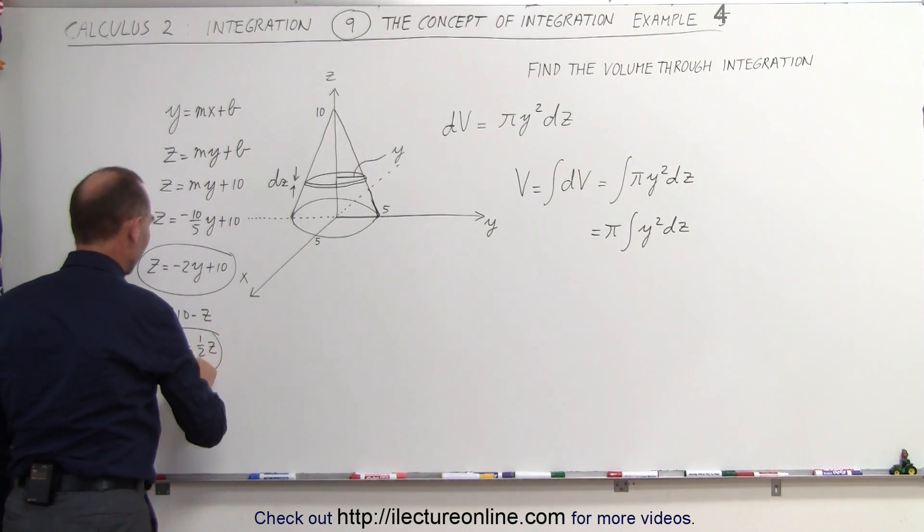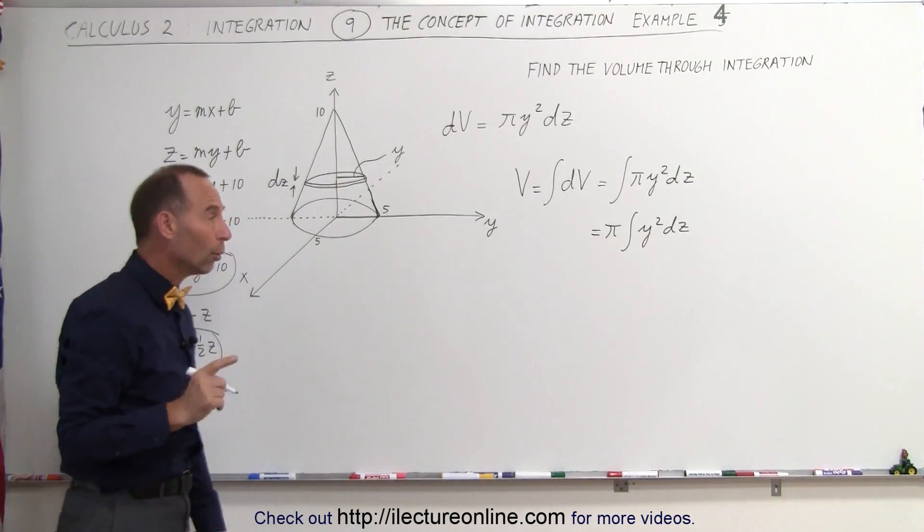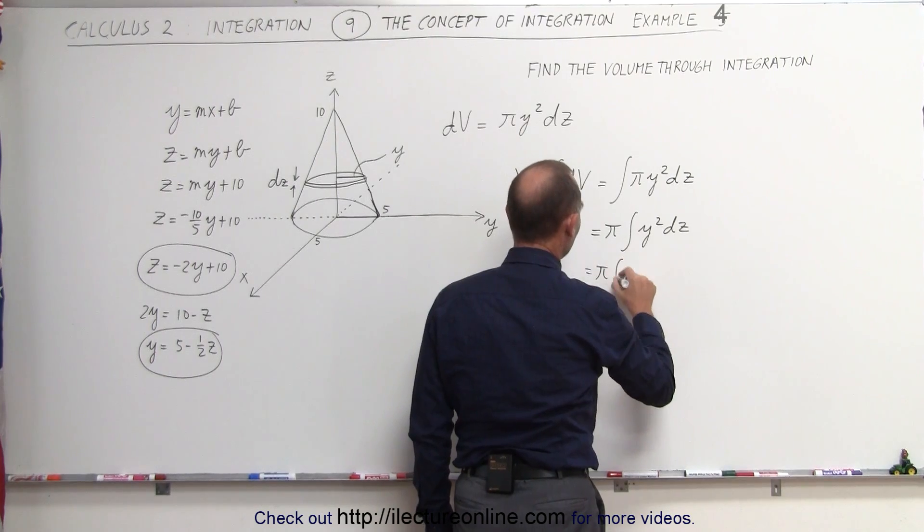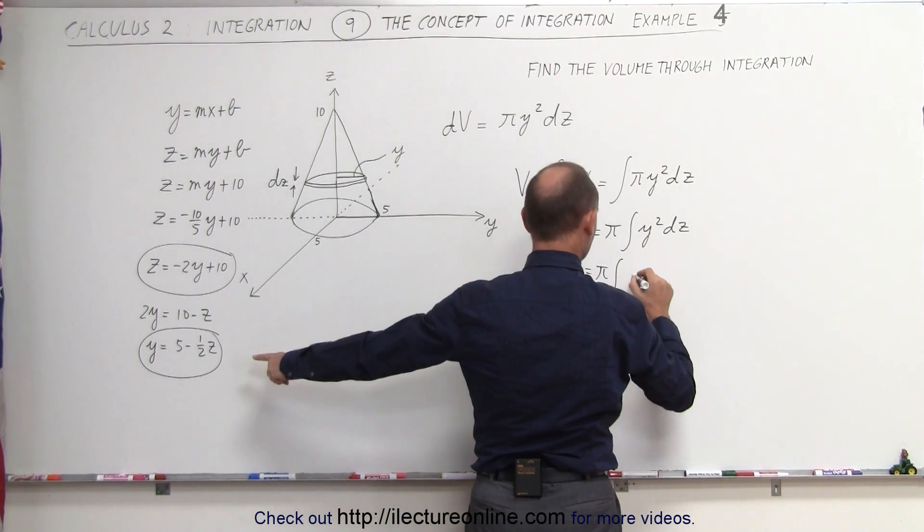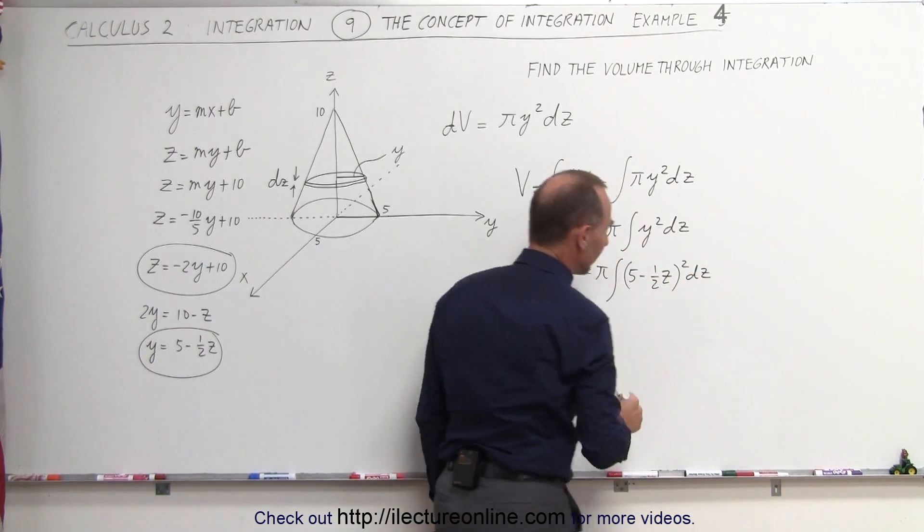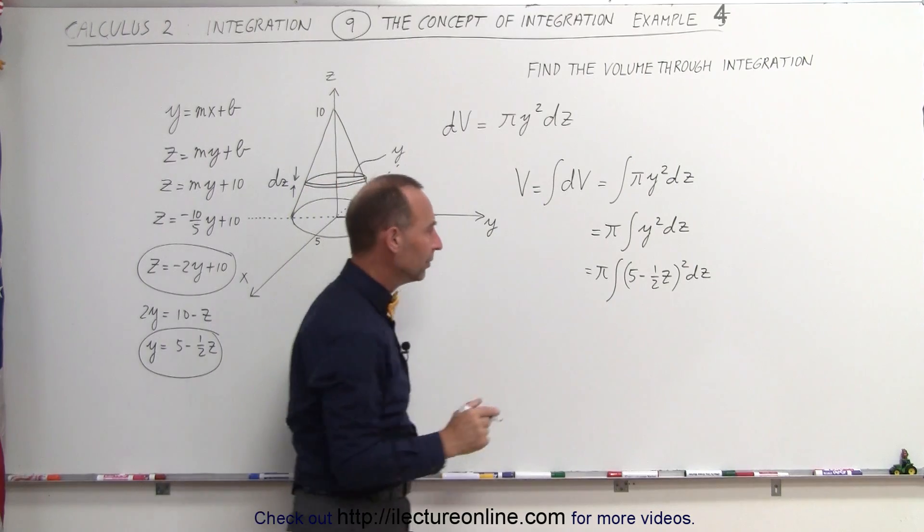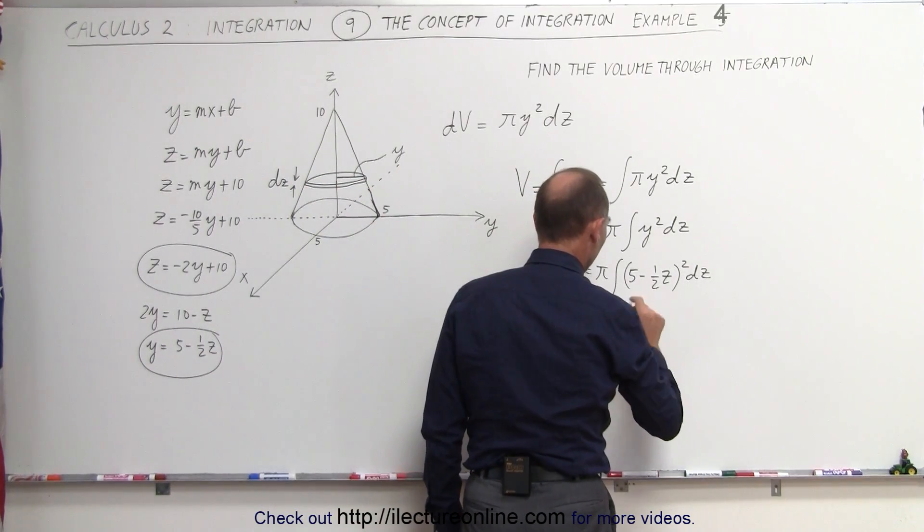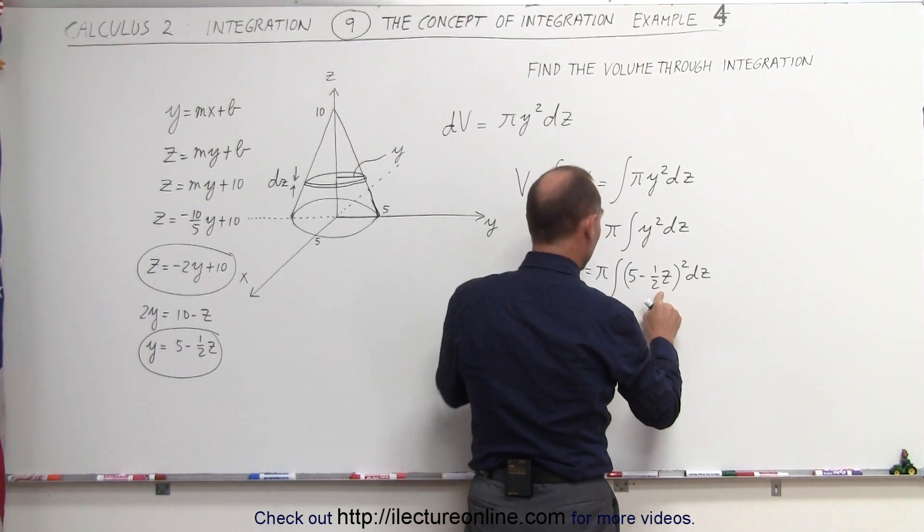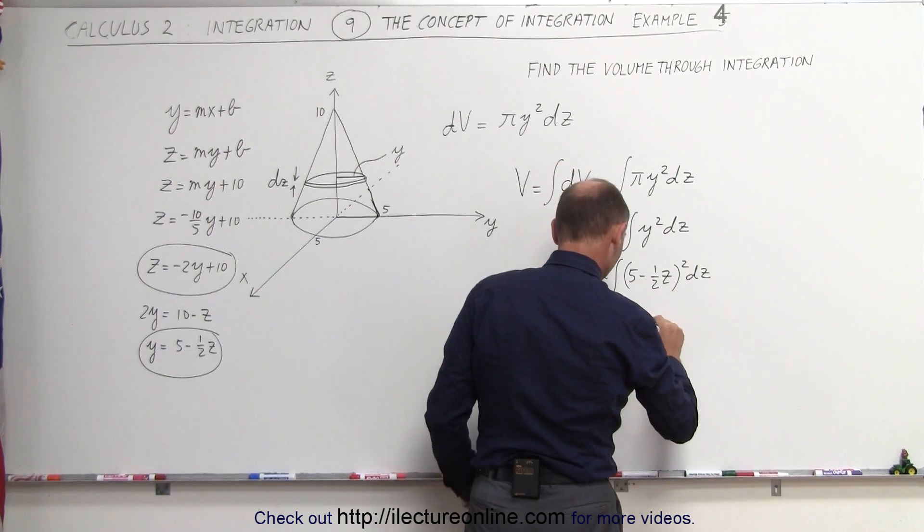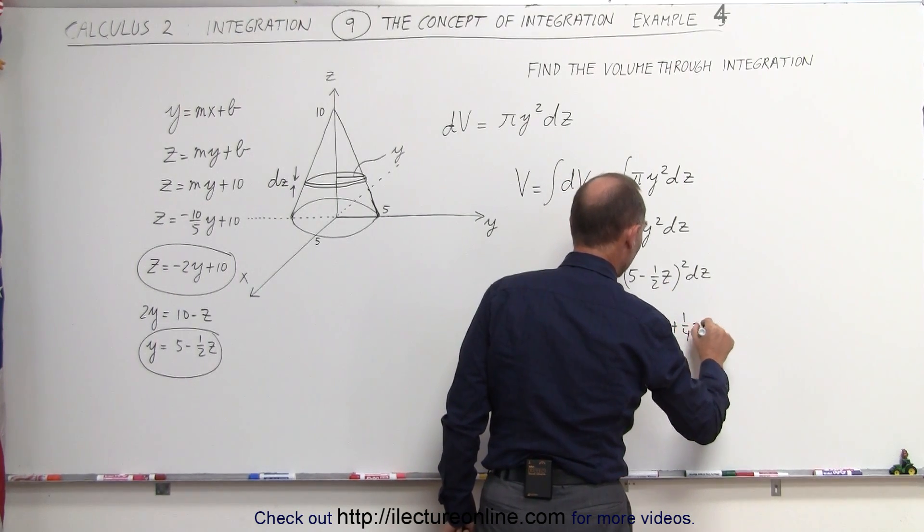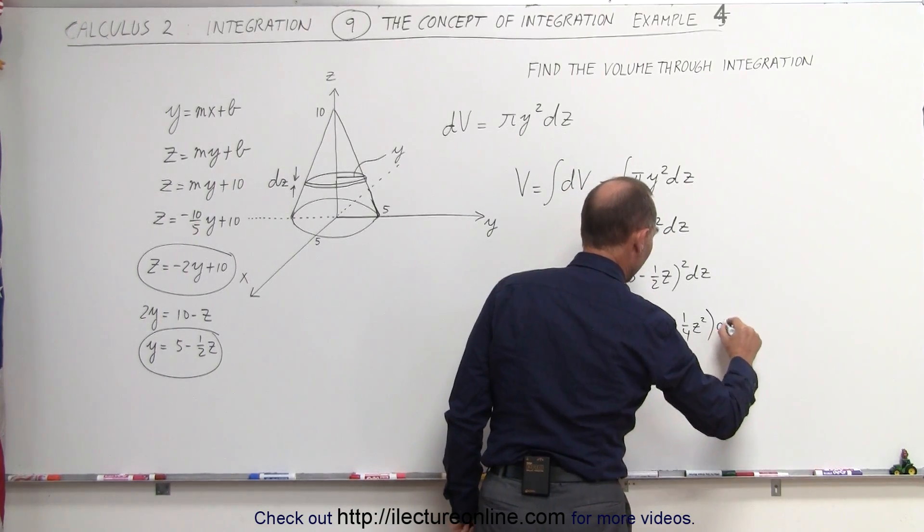And if we take this and substitute that in for here, we now have only the variable z in our integration sign. We can write this is equal to π times the integral of 5 minus 1 half z, quantity squared times dz. Now we just have to multiply that out. This is equal to π times the integral of 25, 5 times this times 2, that would be minus 5z, and this square would be plus 1 quarter z squared. Put the parentheses around that, times dz.